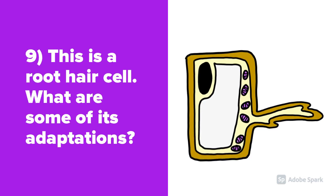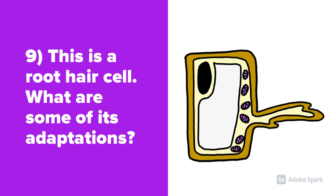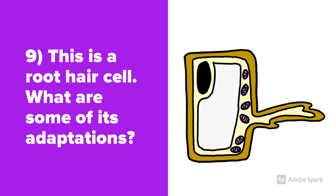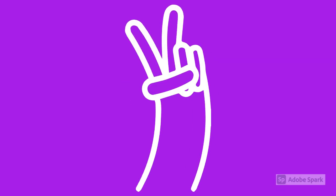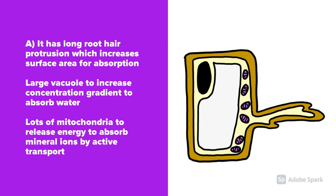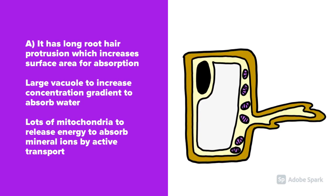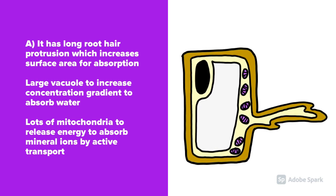Question number 9: This is a root hair cell. What are some of its adaptations? It has a long root hair protrusion which increases the surface area for absorption. A large vacuole helps to increase concentration gradient to absorb water. And it has lots of mitochondria to release energy to absorb mineral ions by active transport.